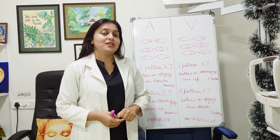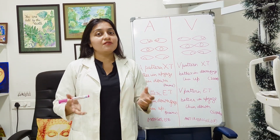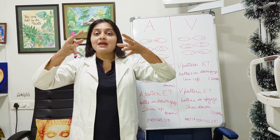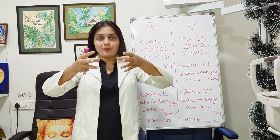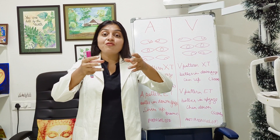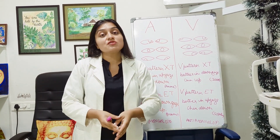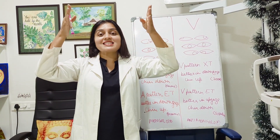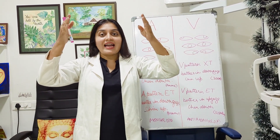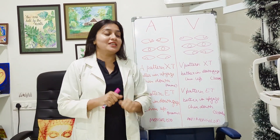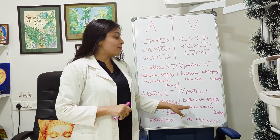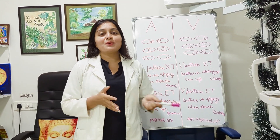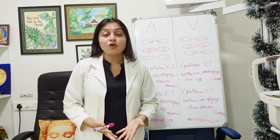Then V pattern esotropia: in primary gaze the eyes are in. They obviously get worse when you look down and are better when you look up. So the esotropia is slightly better when you look up, and that is why you tend to have a chin down position. V pattern esotropia is better in up gaze and the patient has a chin down position. This is commonly seen in superior oblique palsy.